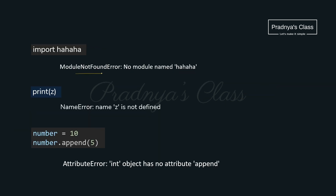Here is one of them: ModuleNotFoundError. Look at the name of the module — we have written it wrong, that's why we are getting this error. Python gives a description of the error for clarity. Here is one more exception: we are directly trying to print the value of variable z which is not initialized, that's why we are getting NameError. And in this example, we are getting AttributeError — this exception occurs when any object does not have the specified attribute. Here, 'number' is not having the append attribute.